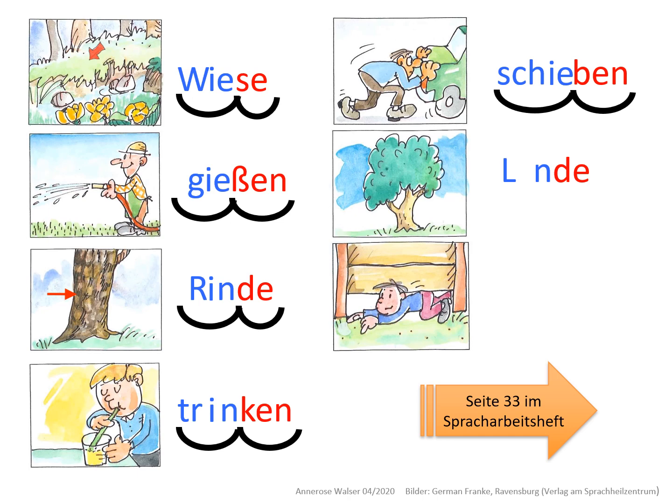Linde – ein schöner großer Laubbaum. Lin-de. Die erste Silbe: das L, die Lücke für das I oder das IE und ein N. Weil nach der Lücke in der ersten Silbe das N noch in der ersten Silbe ist, schreibe ich ein I.